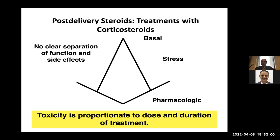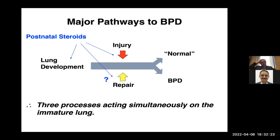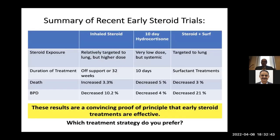Now turning to postnatal steroids. When we think about steroids, there's a pharmacologic effect at the high dose range, a stress effect we all need for surgery or major physiological stress, and a basal level we all must have to maintain blood pressure. Toxicity is proportionate to dose and duration of therapy. There are major pathways in BPD which may be sensitive to steroids: lung development, injury, and repair — we're probably affecting all three complex pathways simultaneously when we give steroids.